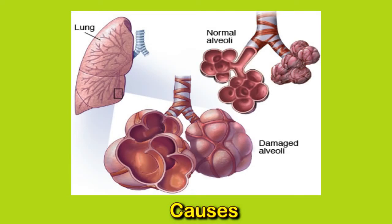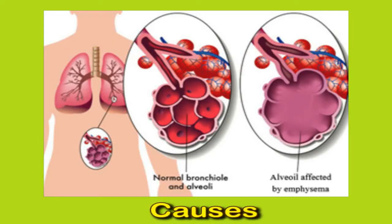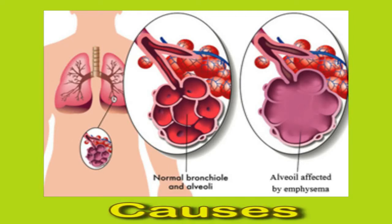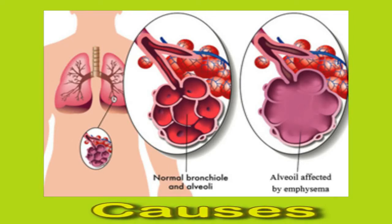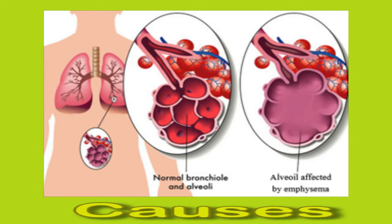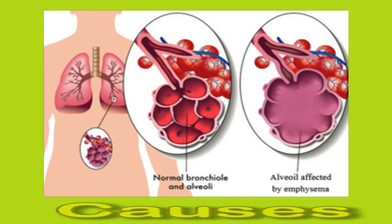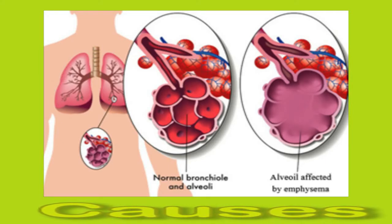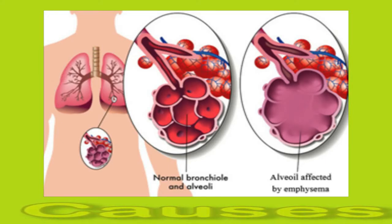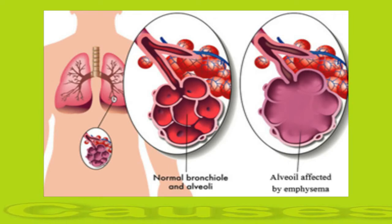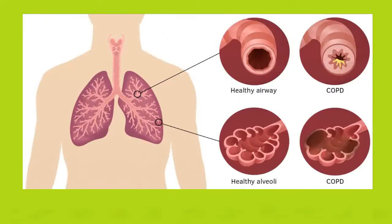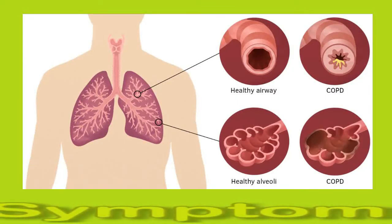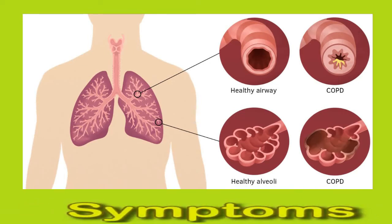Hypoxia occurs when the blood does not deliver enough oxygen to the tissues. A person's body can adapt to cope with lower oxygen levels than usual. However, in people with COPD, hypoxia in the lungs means oxygen levels become extremely low. When oxygen levels reach such a low level, the organs in the body do not get enough oxygen and begin to develop damage and injury. This is known as hypoxemia.